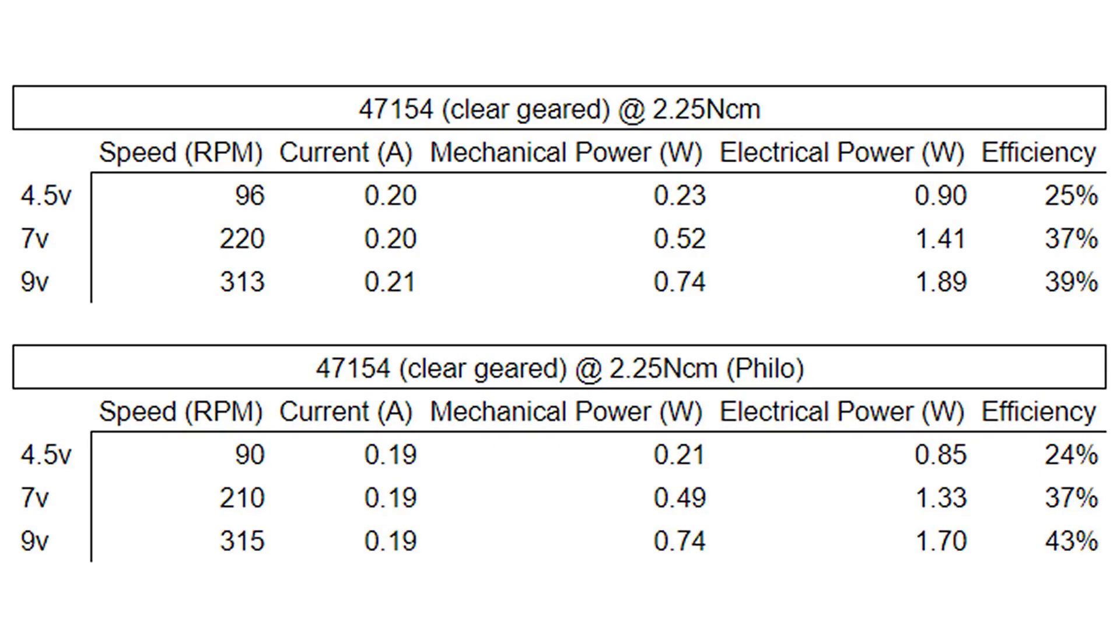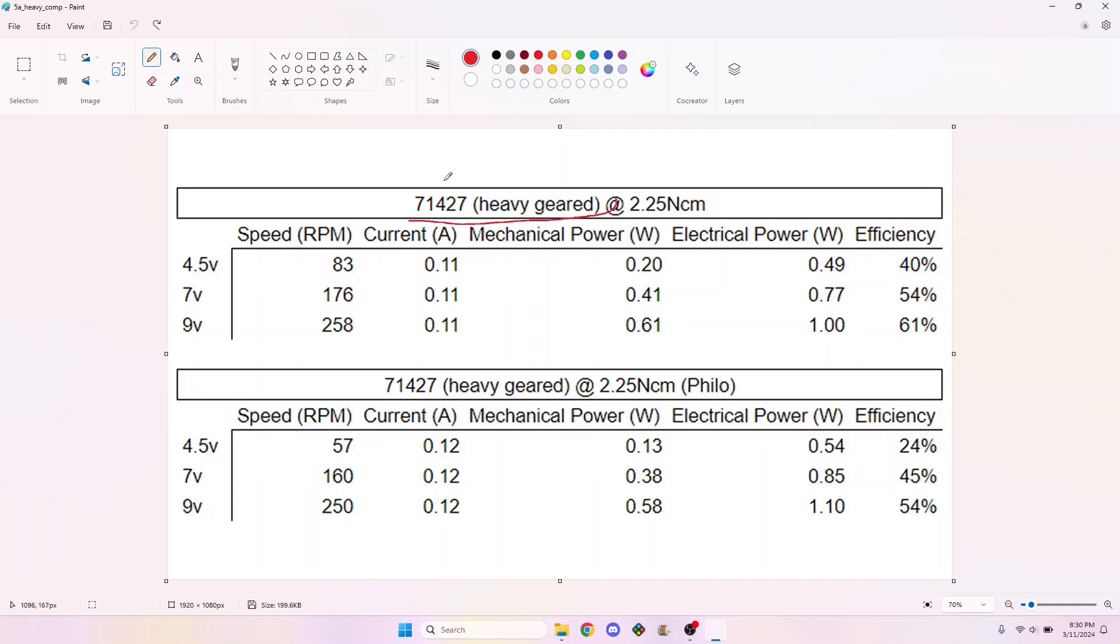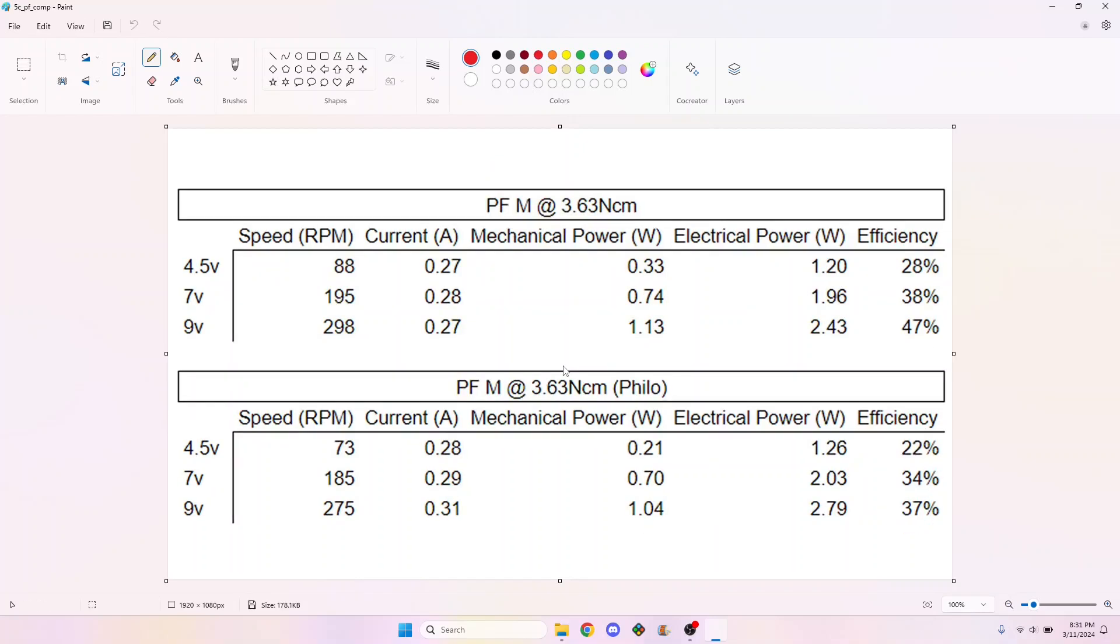I tested the heavy and clear geared motors as well as the PFM. I felt pretty good about our speed, current, and power values, but error gets compounded when calculating the efficiency so those numbers look worse than the others.